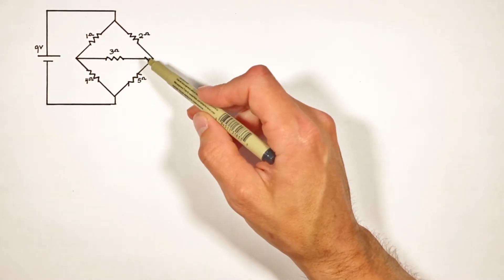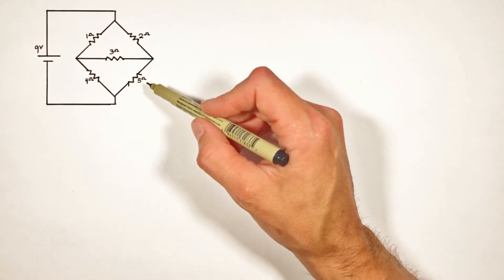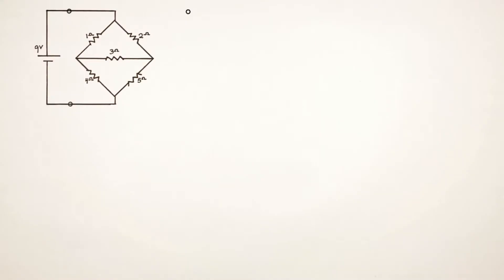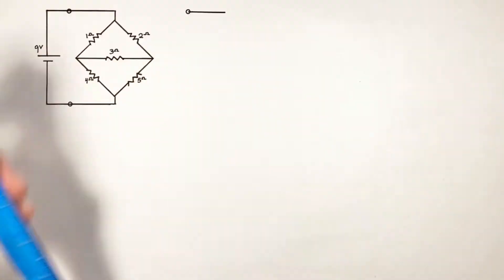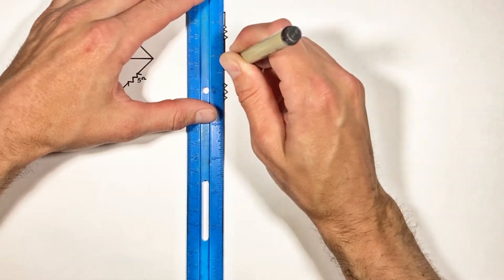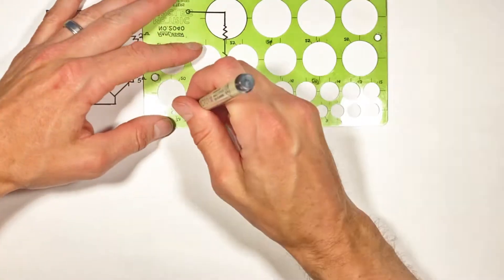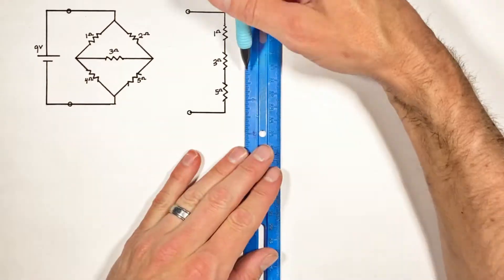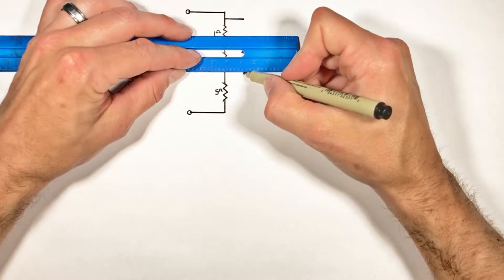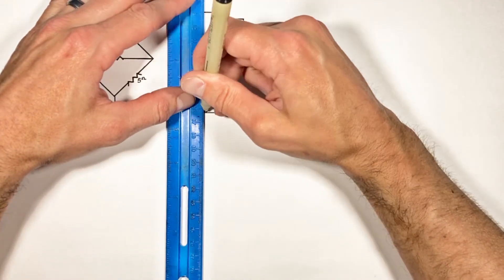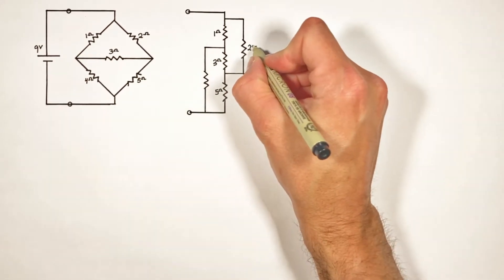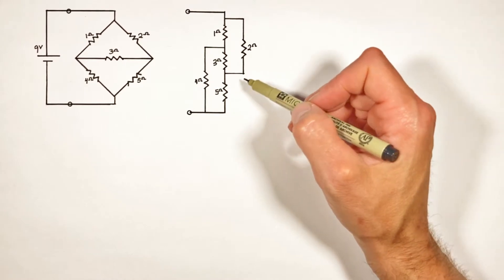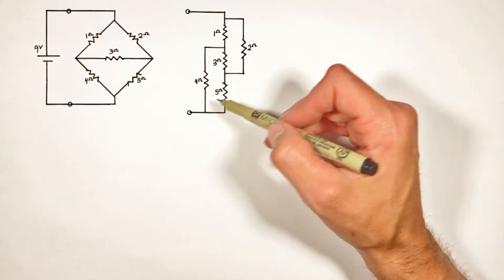In order to understand why we can't just tackle this circuit using simple series and parallel combinations, I want to redraw this circuit in a way that's going to be a little bit clearer. Imagine starting at this port here, we stretched the circuit out along the pathway that goes through the 1, 3, and 5 ohm resistors so they were all in a line. You'll notice the 2 ohm resistor effectively bypasses the 1 and 3, and the 4 ohm resistor is bypassing the 3 and 5 ohm resistors.